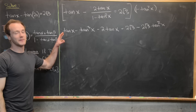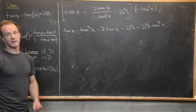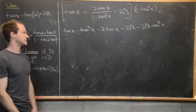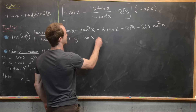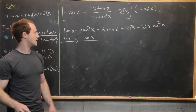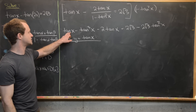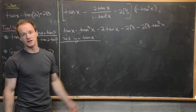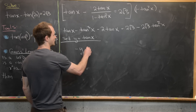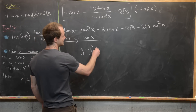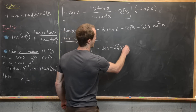Now I'm going to make a change of variables, being inspired by the fact that this is a cubic polynomial in the variable tangent of x. So I'll set y equal to tangent of x. Notice that tangent of x minus 2 tangent of x simplifies to negative y, and we have minus y cubed on the left, and 2 root 3 minus 2 root 3 y squared on the right.